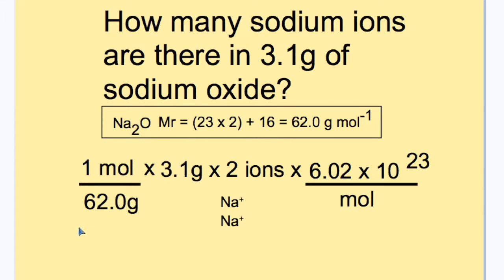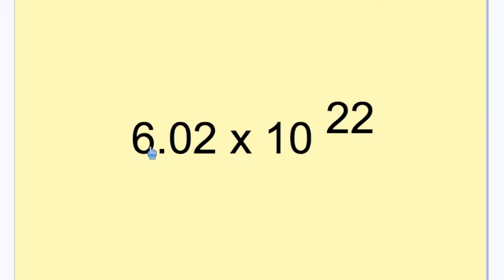We must realize that these two numbers can cancel to produce 1 twentieth, which is 0.05, and then 0.05 multiplied by 2 is 0.1, and that 0.1 multiplied by 6.02 by 10 to the power of 23 is 6.02 by 10 to the power of 22.